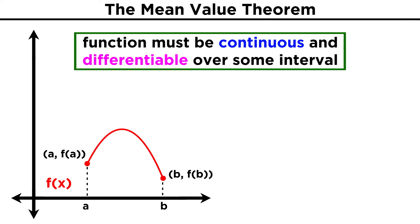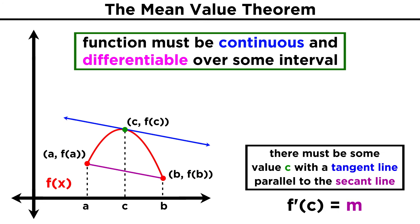What the theorem says is that for any such function, there must be some number c within this interval, whereby f prime of c, or the derivative of this function evaluated for the input c, will give a value that is equal to the slope of the line connecting these other two points, which we call the secant line, with a slope given by rise over run, or f of b minus f of a, over b minus a.